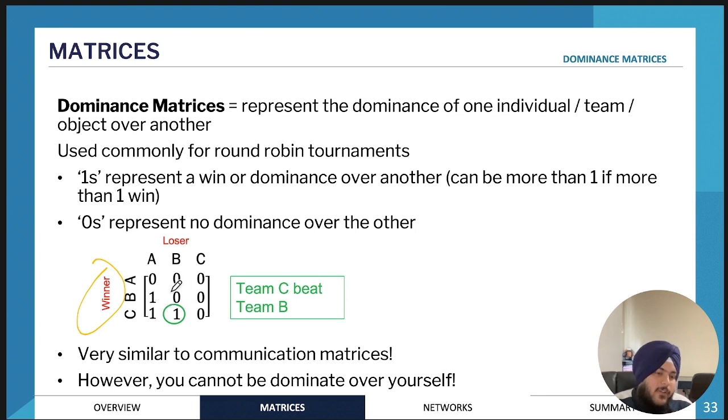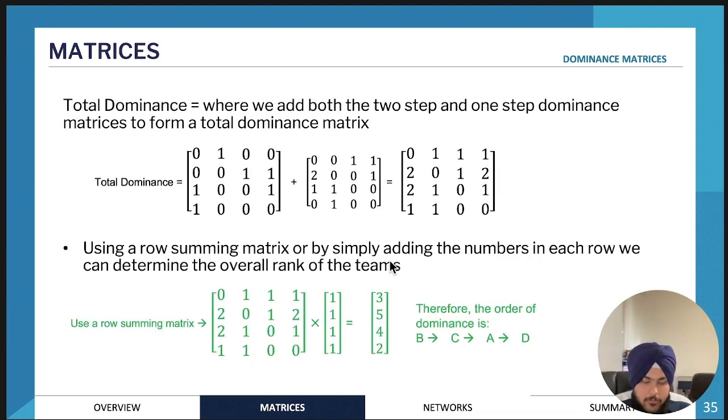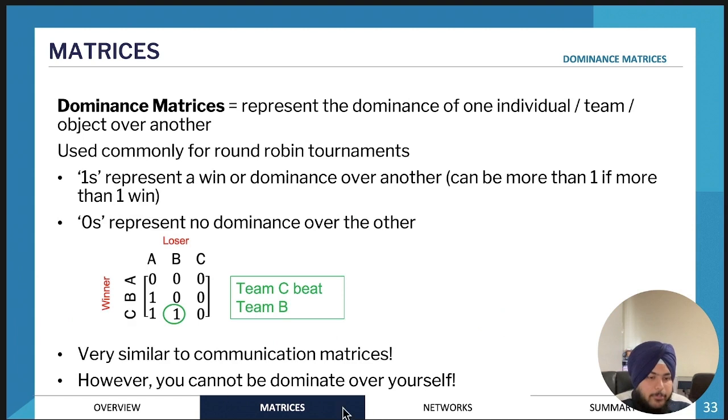If there's a zero here, what that means is if B is versing C, B is going to lose and C is going to win. That's how you would interpret this type of matrix. It's very similar to communication matrices, but just get used to the headings and what they mean.